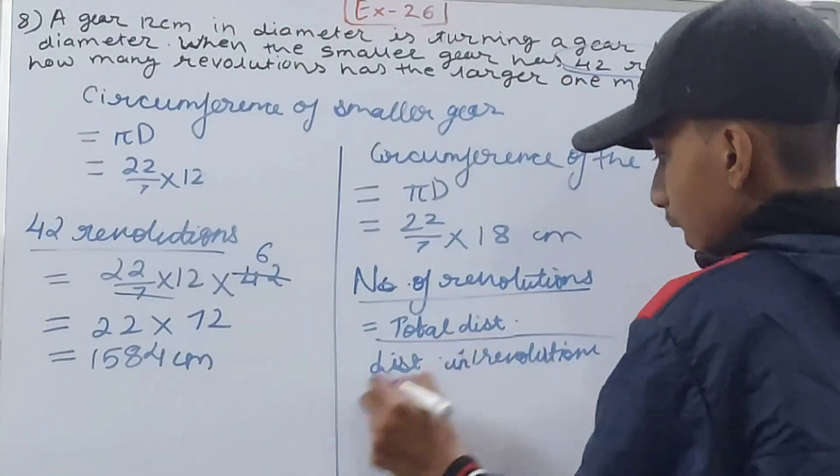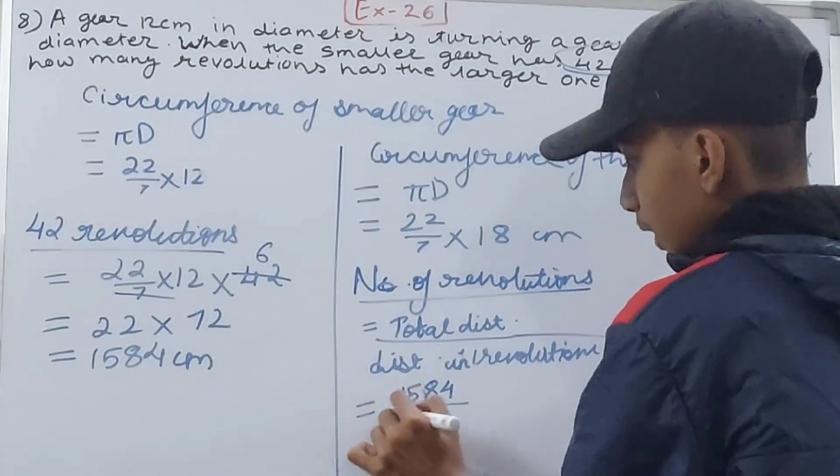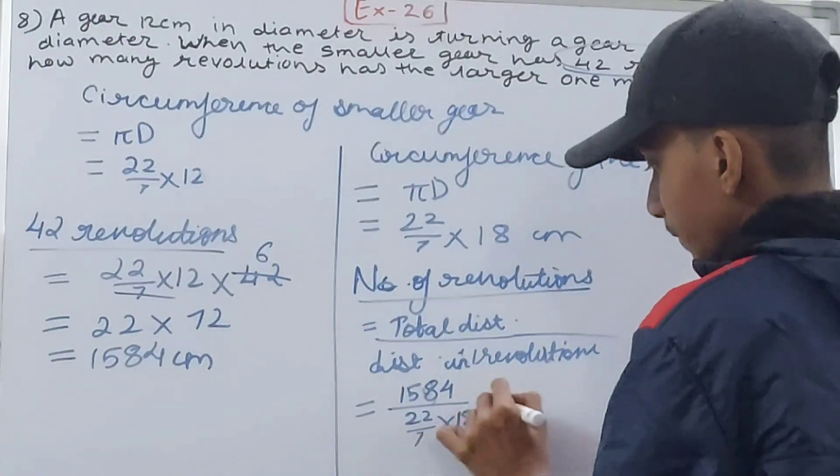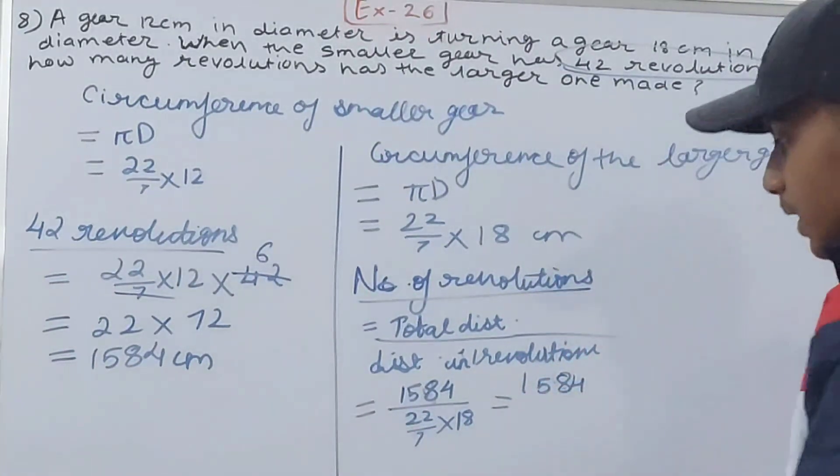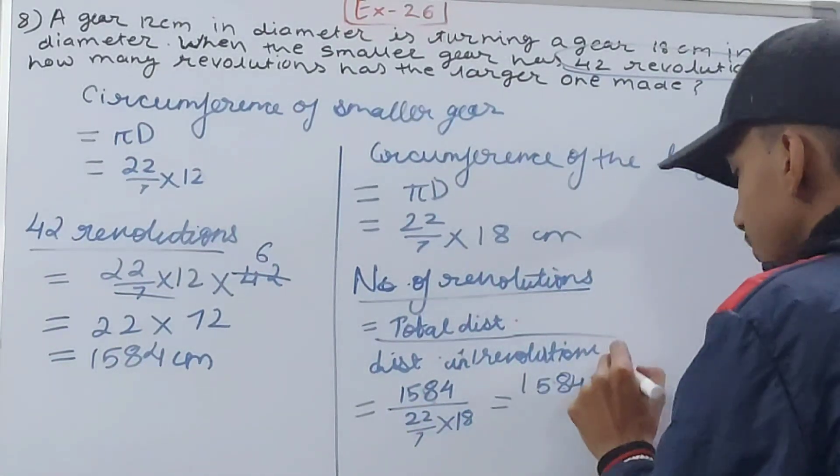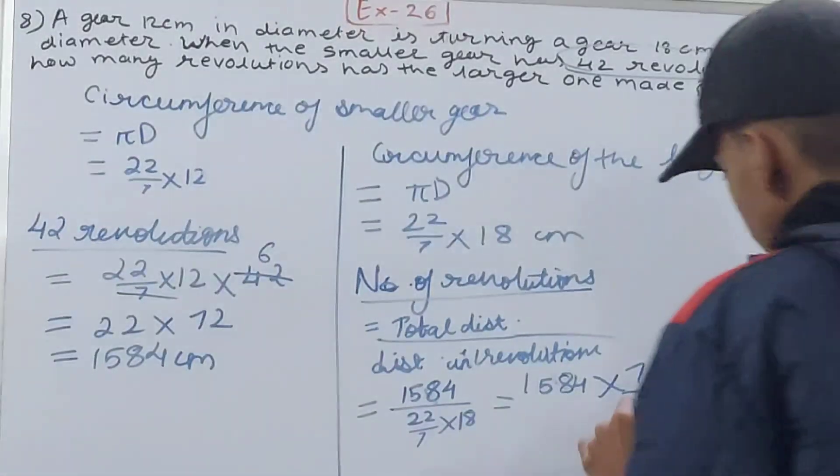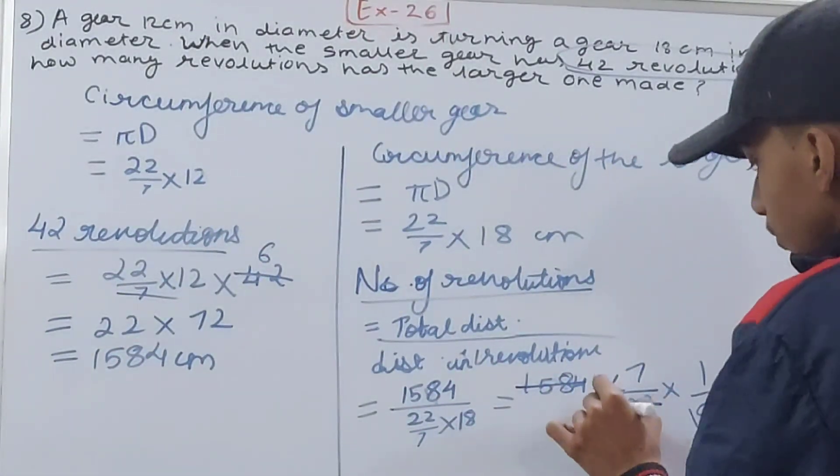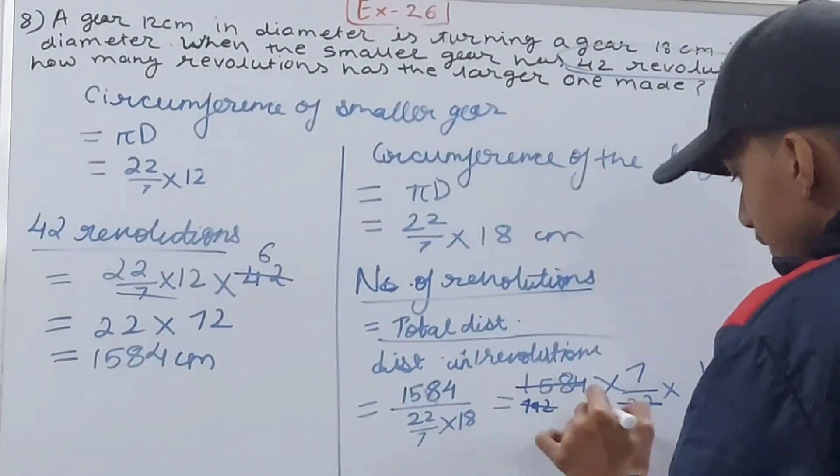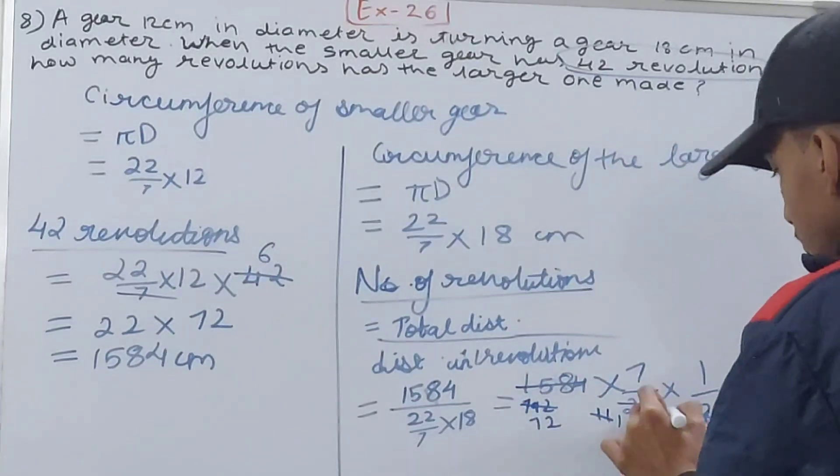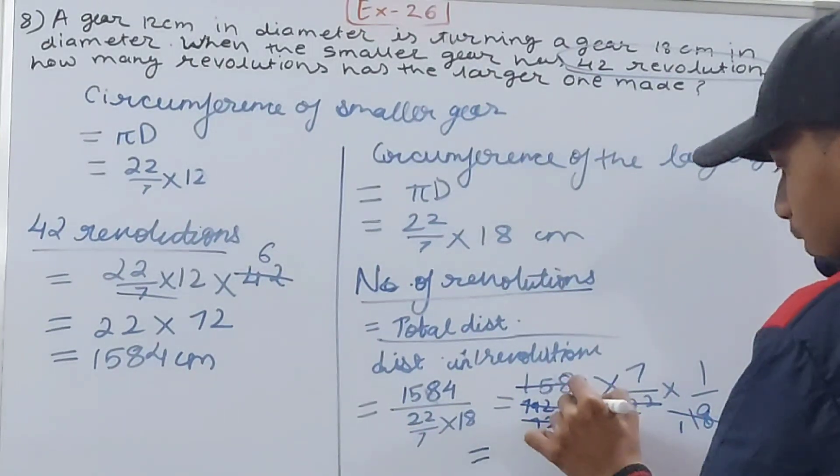We have total distance 1584 upon 22/7 × 18. So 1584 × 7/22 × 1/18. Let's cancel: 1584 and 22 cancel by 2, giving 792 and 11. Then 792 becomes 72 when divided by 11. 18 and 72 cancel: 1 and 4. So we get 4 × 7 = 28 times. It will take 28 revolutions to complete that distance.